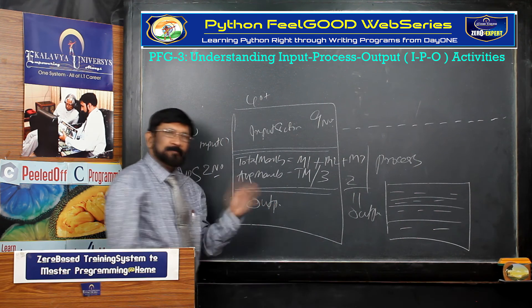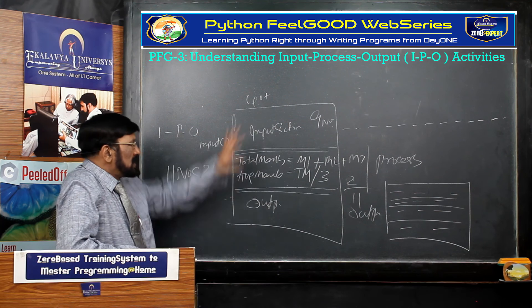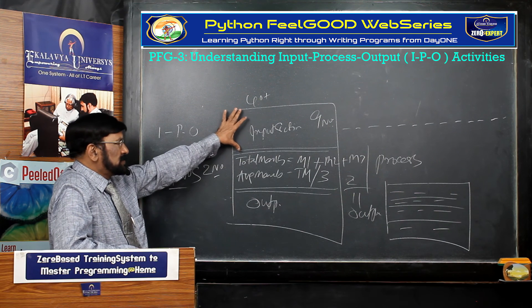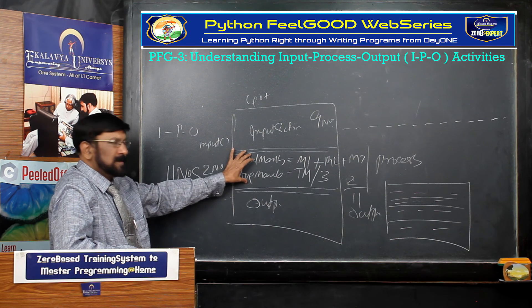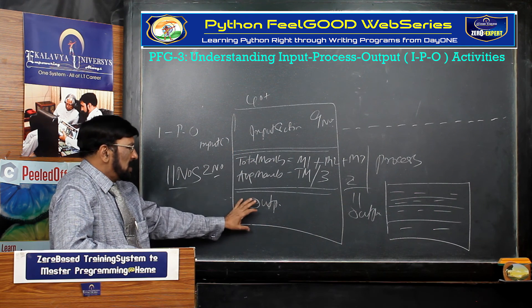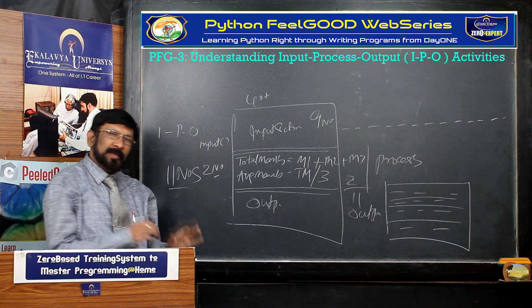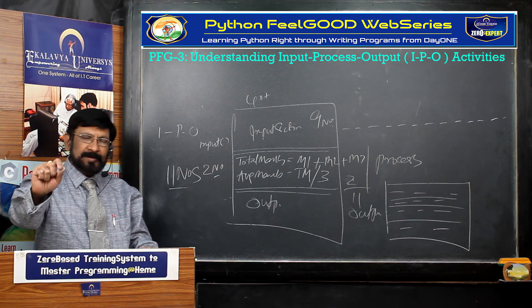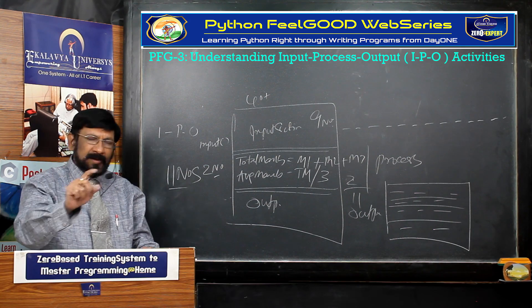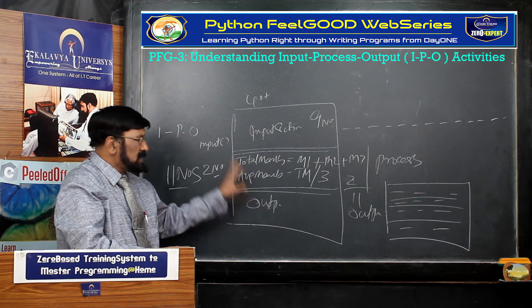So, every program you take — in that 40 lines, around 15 lines are input statements, two lines are processing statements, and the rest of the lines are output statements. In every program, whatever statement you write, it belongs to one of these three blocks: Input, Process, or Output.